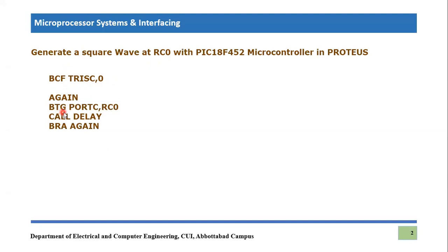Then what we do: we use bit toggle port C, RC0 — so we toggle this specific bit. If it is 0 we make it 1, or if it is 1 we make it 0 using this toggle instruction. This command will toggle port C at the RC0 pin. So RC0 bit will be toggling — if it is 0 it is going to be 1, and if it is 1 it is going to be 0.